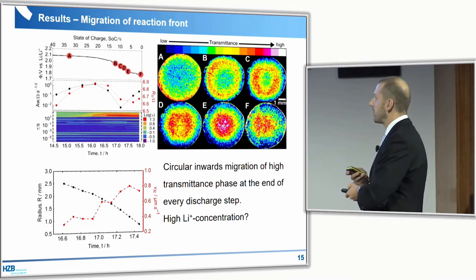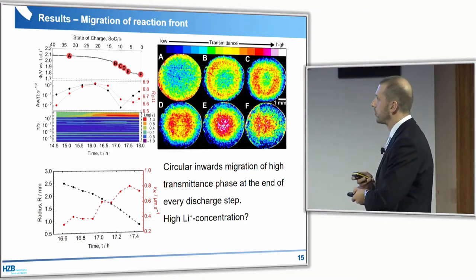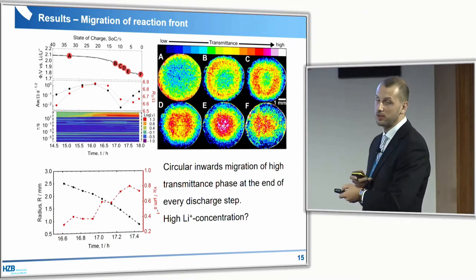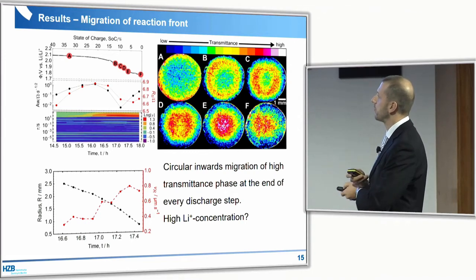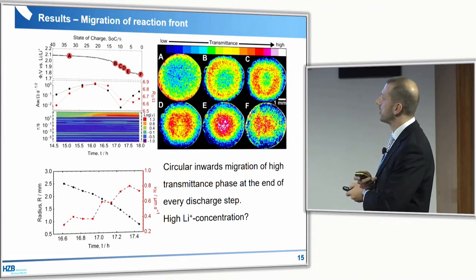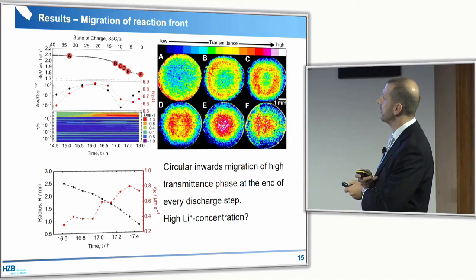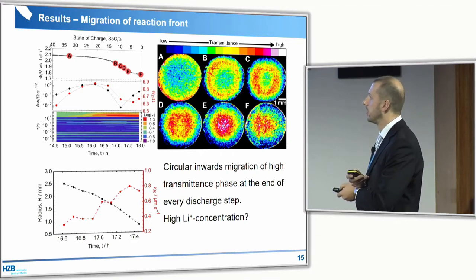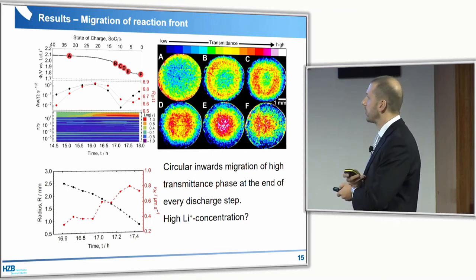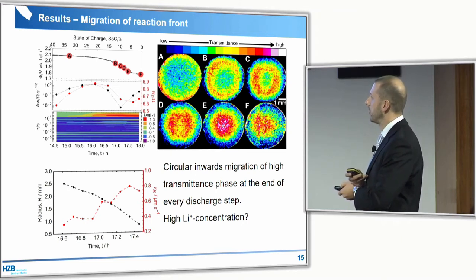One assumption is that this is due to the high lithium ion concentration which migrates inwards. You can also measure the radius of this ring, take the first derivative, and get the velocity. You can see this is in the same range as the growth of the sulfur dendrites — 0.1 micrometers per second at maximum.